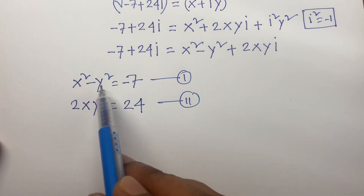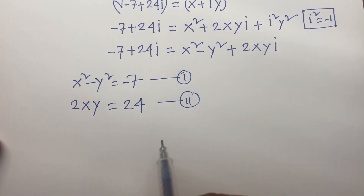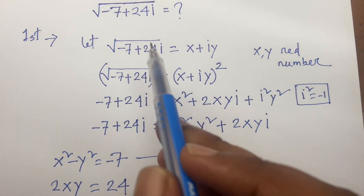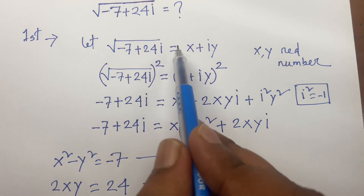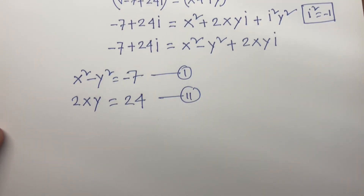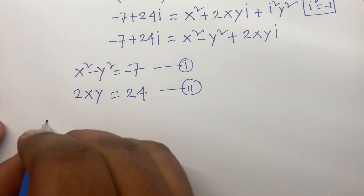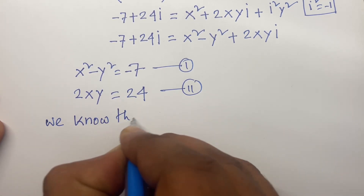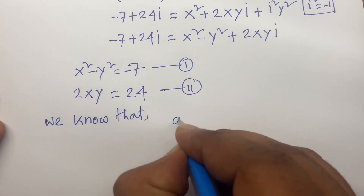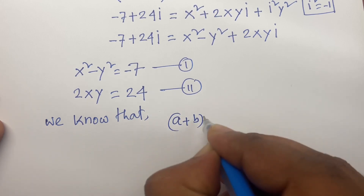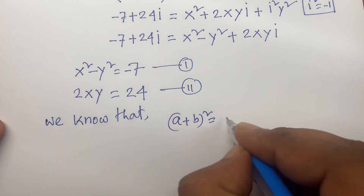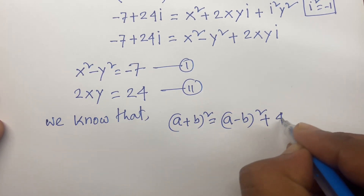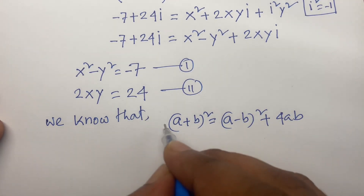We need to find x² plus y² to determine the values of x and y. We use the identity: (a + b)² equals (a − b)² plus 4ab.